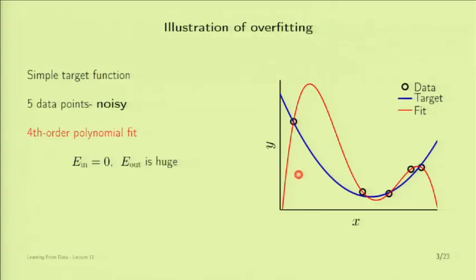Overfitting is a comparative term—one situation must be worse than another; you went further than you should. There's a distinction between overfitting and just bad generalization. I'm calling this overfitting because using a third-order polynomial would not achieve zero training error in general, but would get a better E_out. The overfitting happened by using fourth order instead of third order—you went further. That's the key.